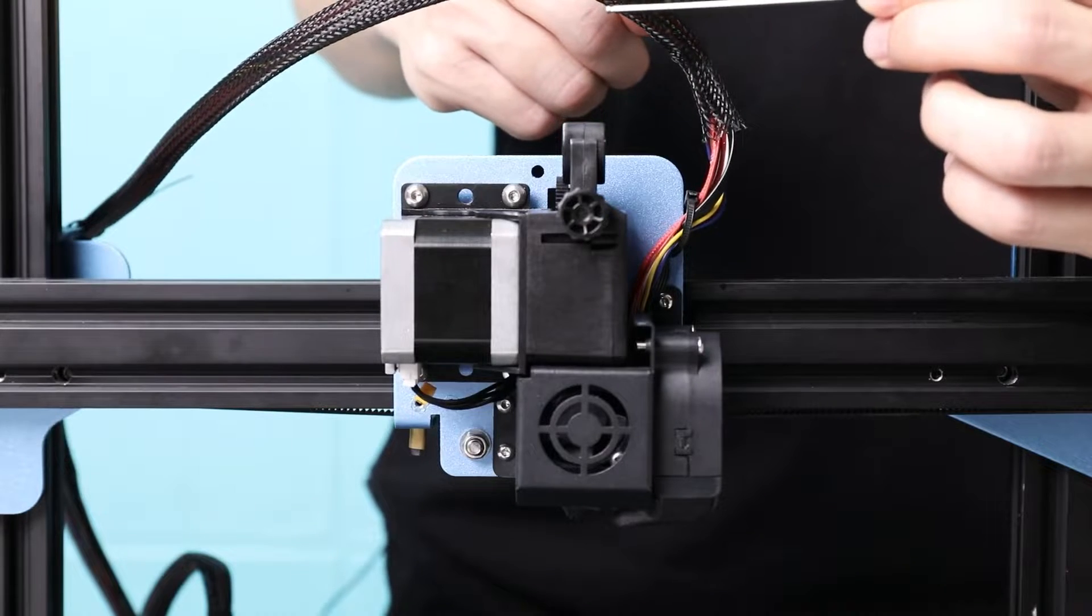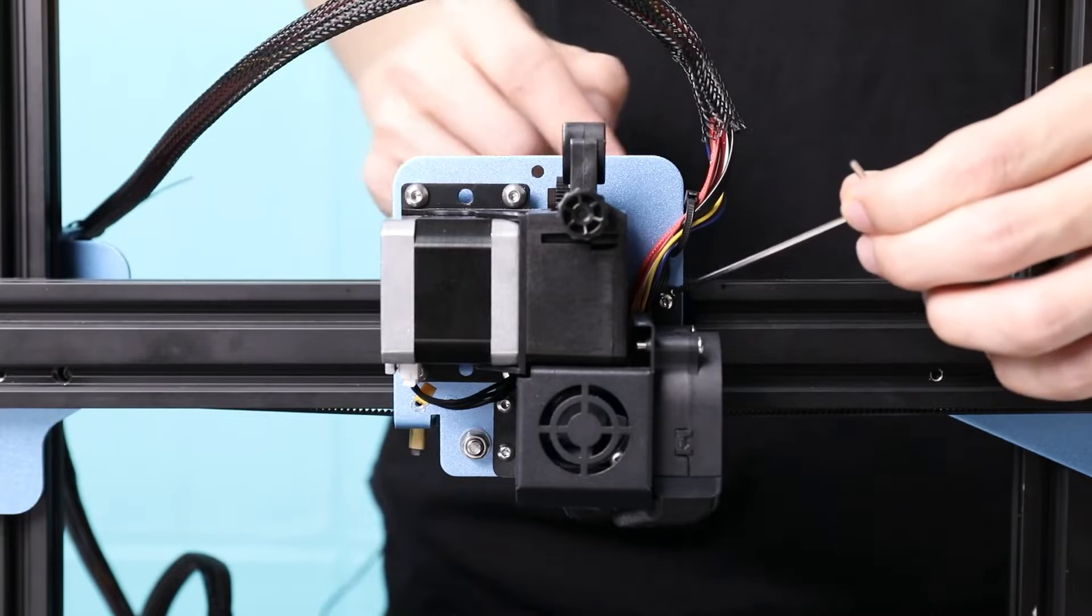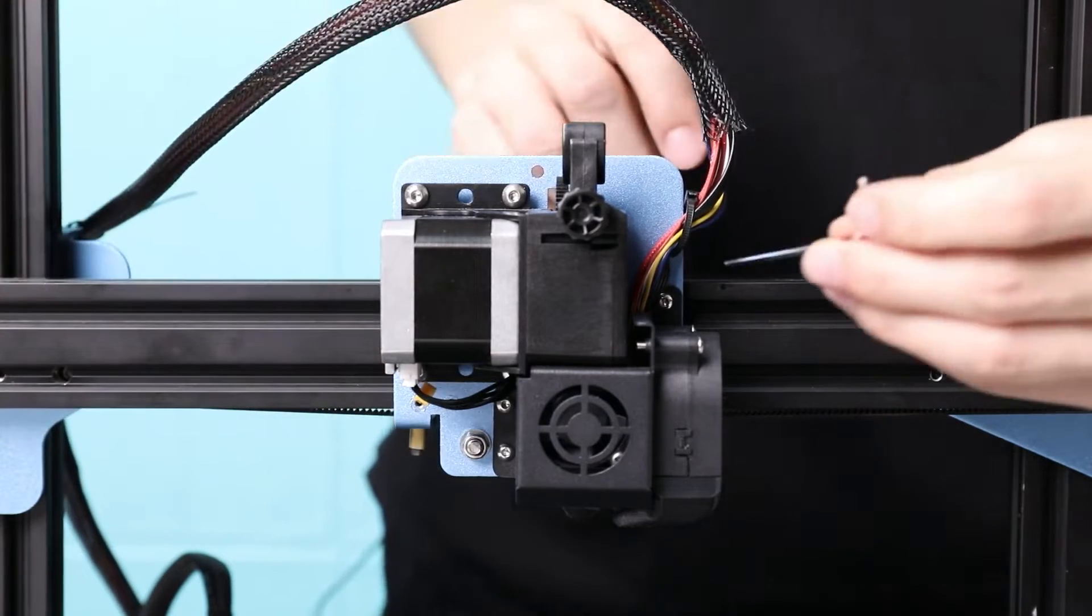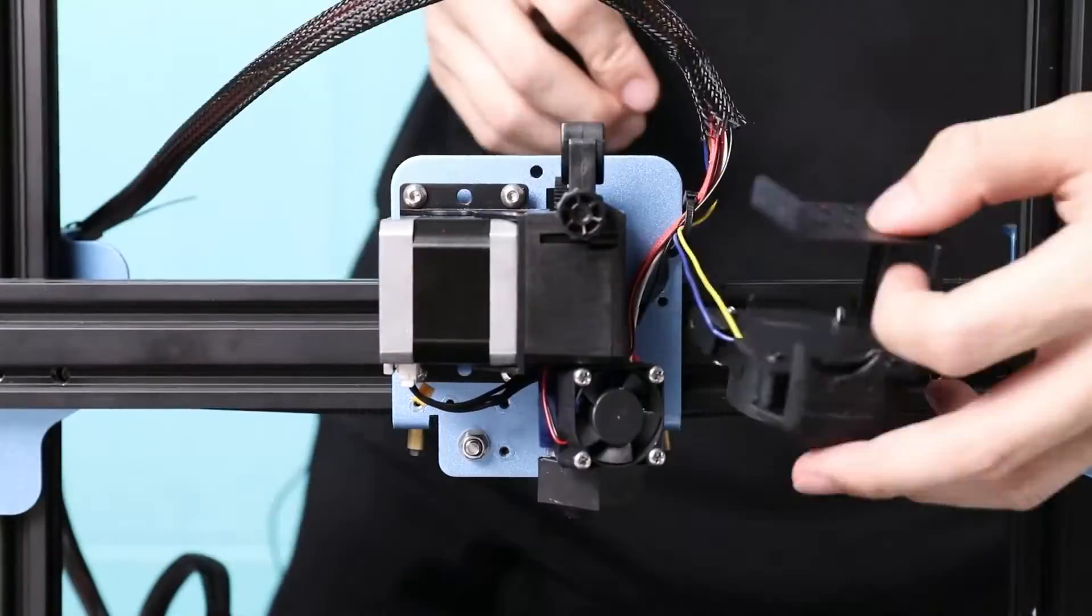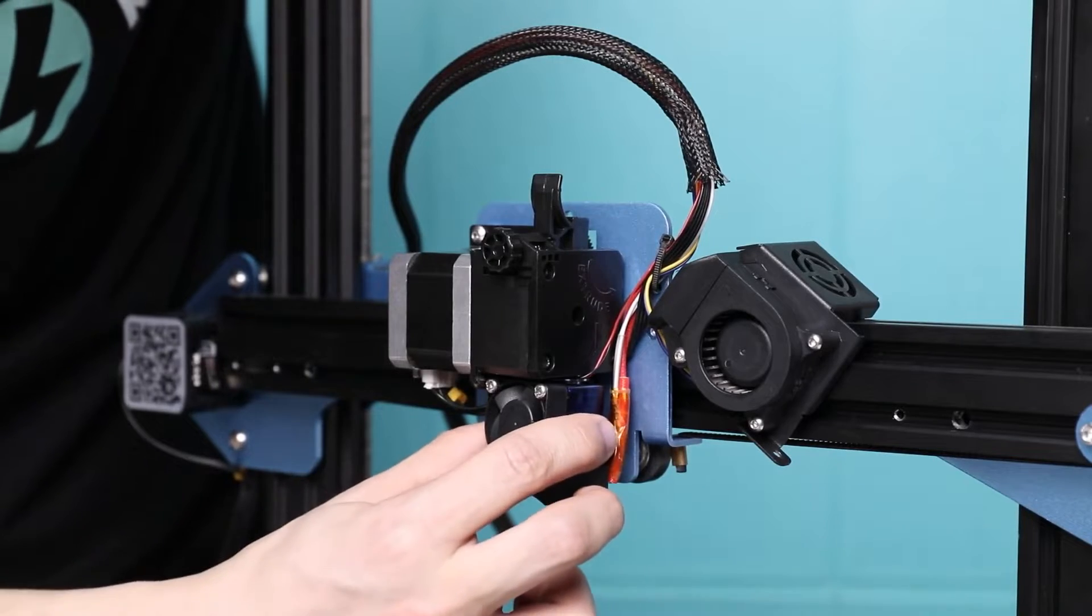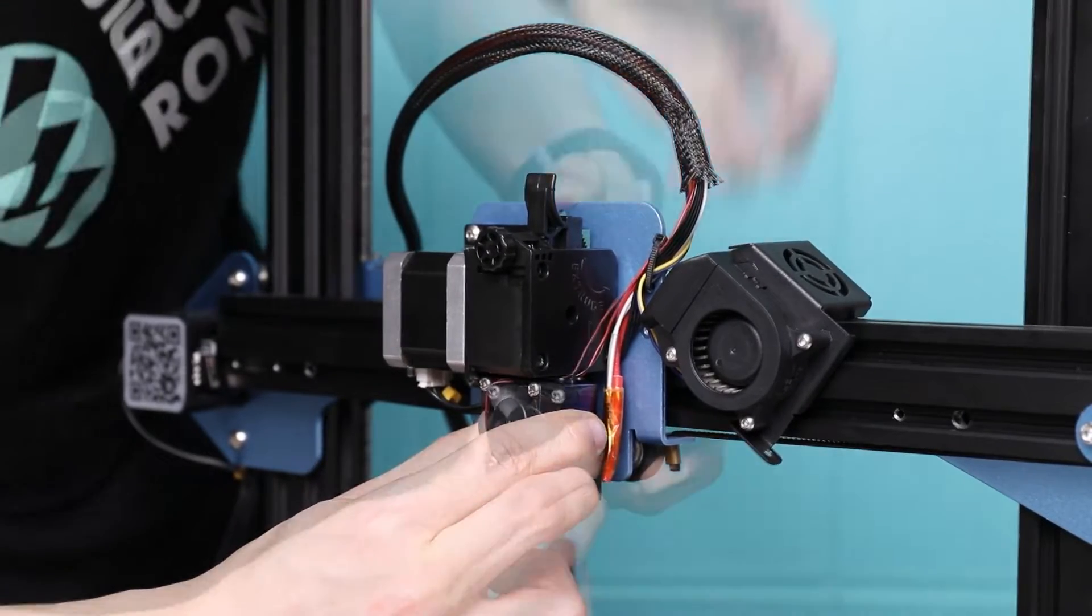Take this ball-end hex wrench and remove these three screws: this one, this one, this one. Let's go. Set the fan shroud aside. Unsnap the cooling fan from the heat sink and set it aside.